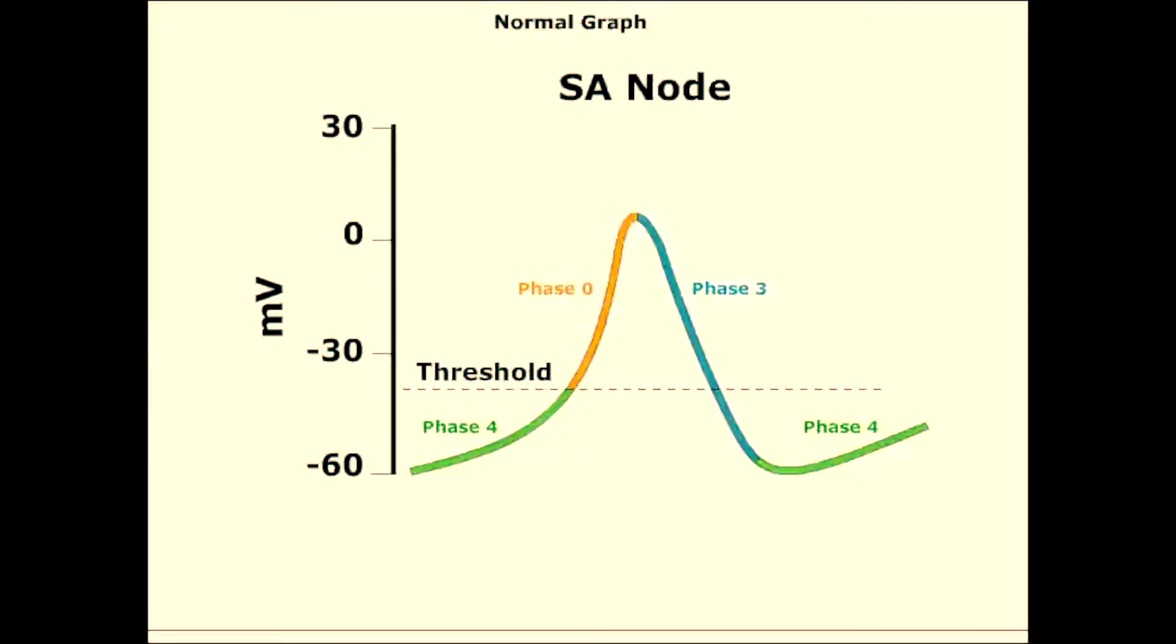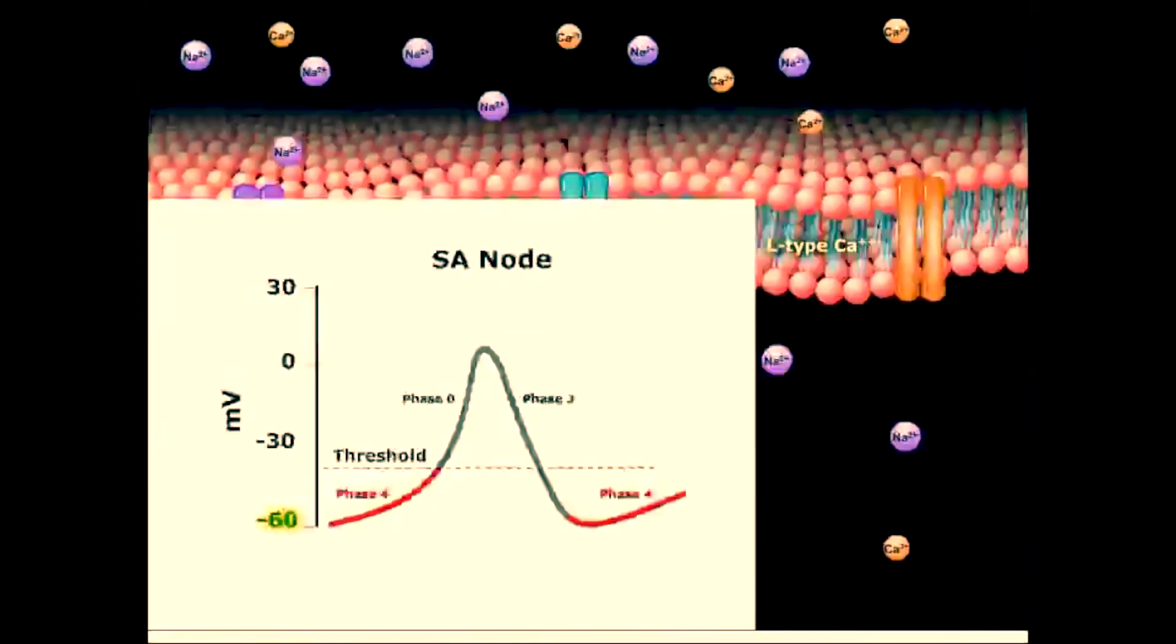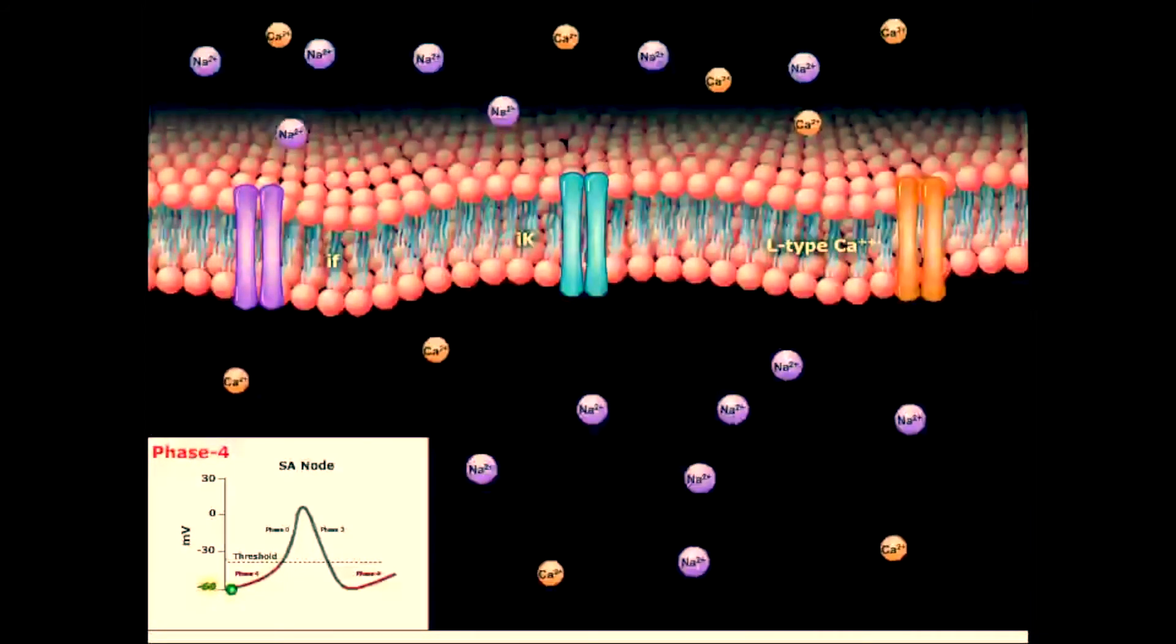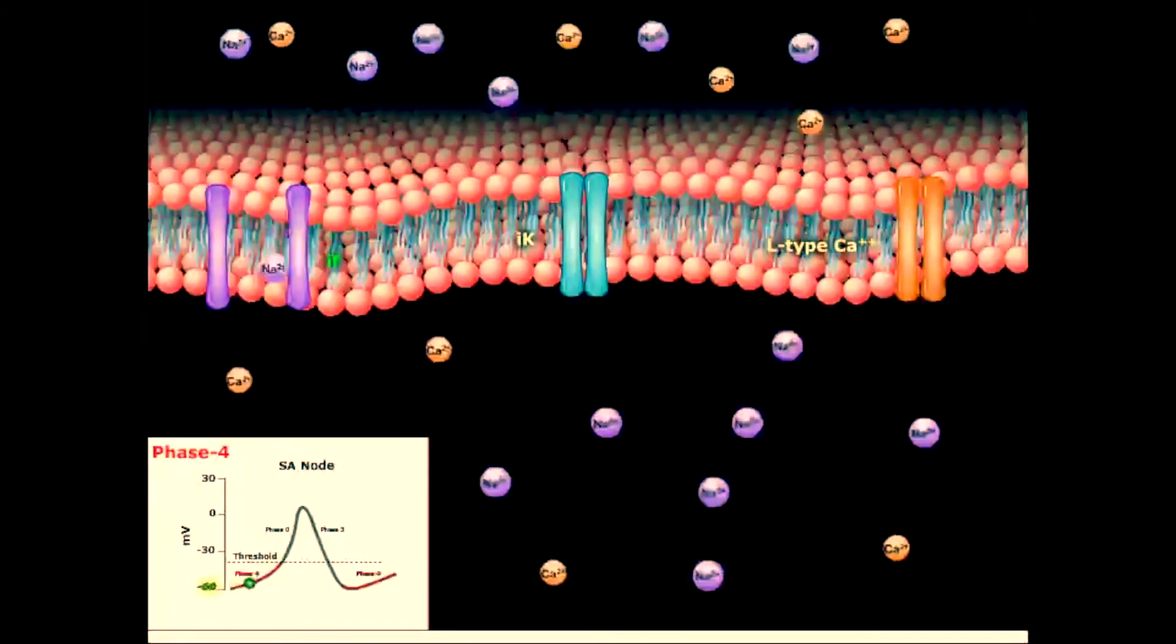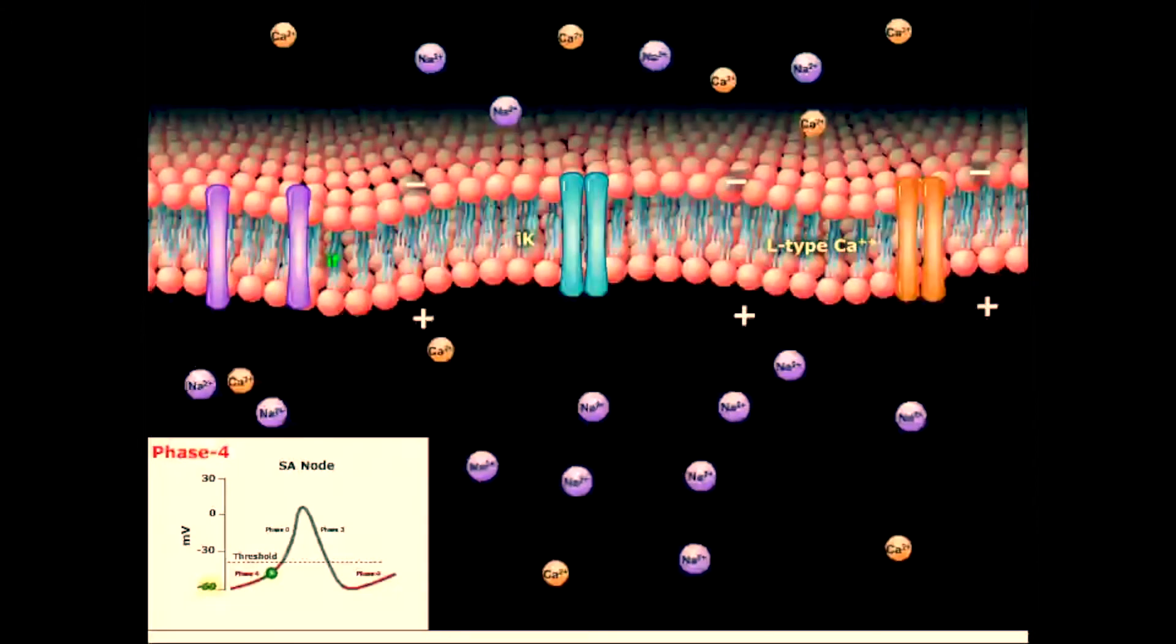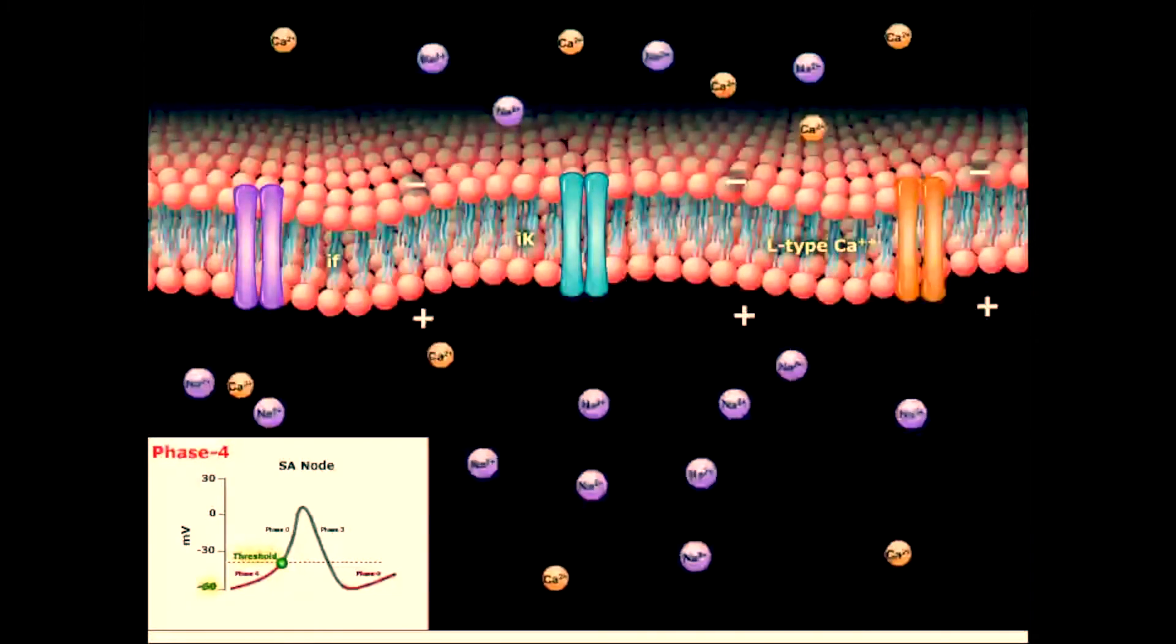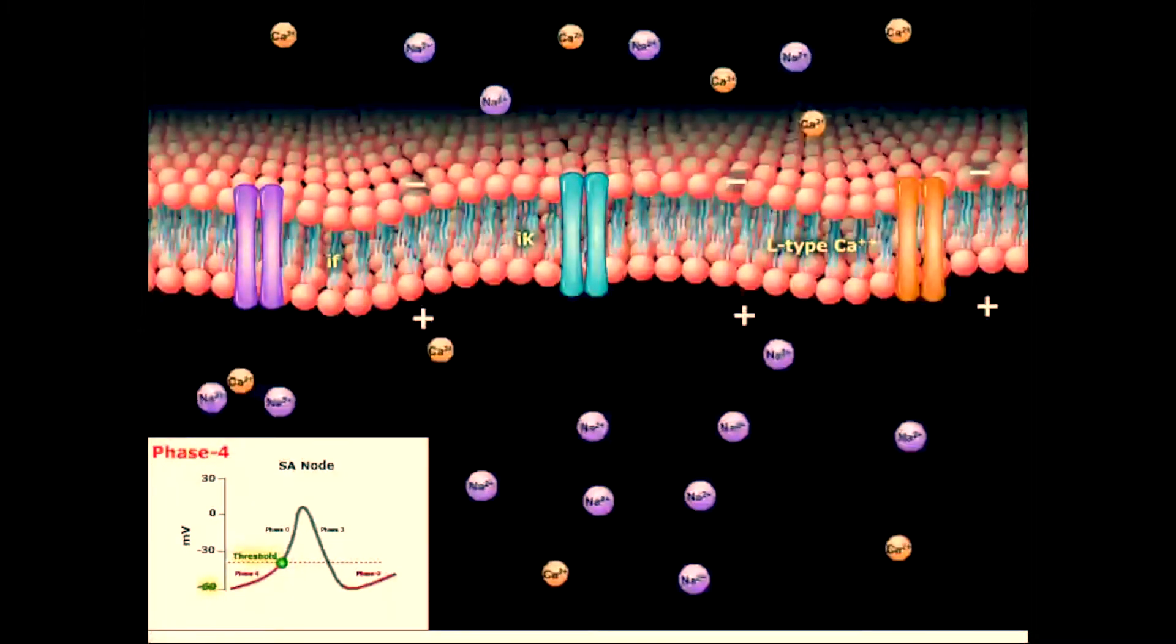These cells have no true resting potential. Instead, they generate regular spontaneous action potentials. Sinoatrial nodal action potentials are divided into three phases. Phase 4 starts at the end of repolarization, when the membrane potential is at its most negative, about minus 60 millivolts. Let's visualize what happens at the cell membrane level during this phase, which is also represented graphically in the small window. Funny channels, labeled here as IF, open to allow the influx of sodium. This reverses the membrane potential. Therefore, this reversal of transmembrane voltage causes the cell to reach its threshold for spontaneous depolarization.